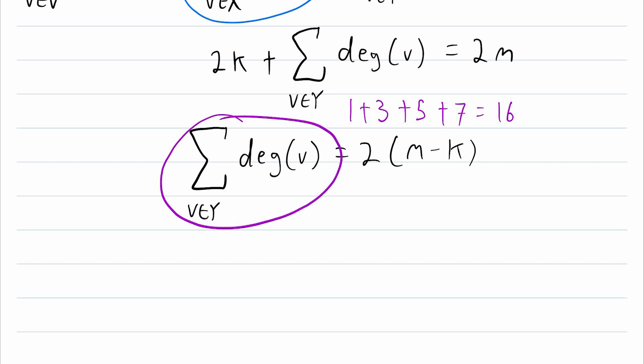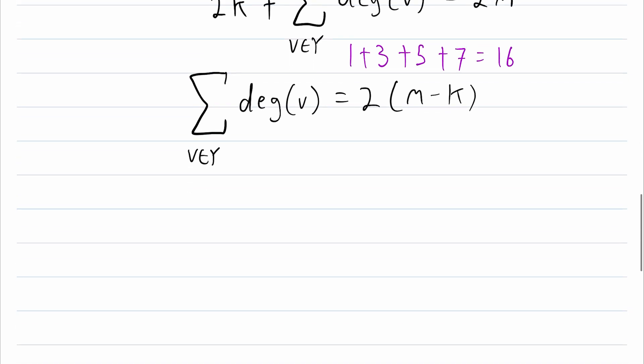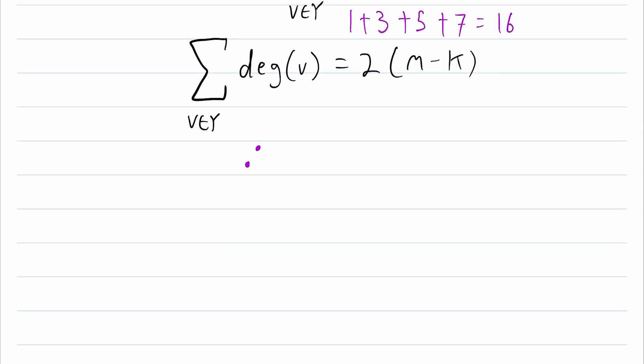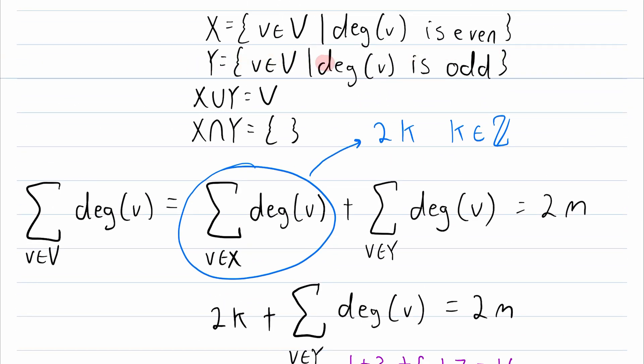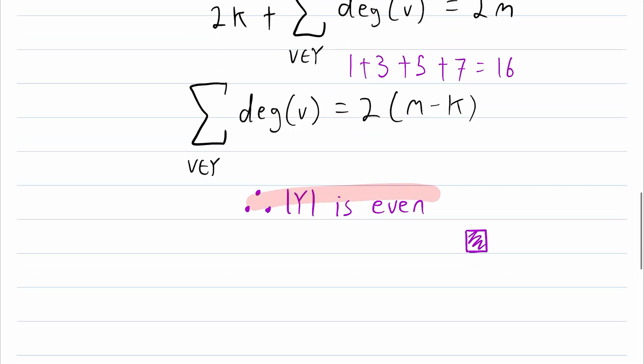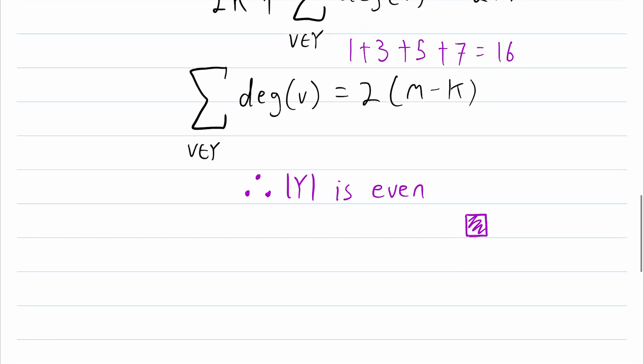Therefore, the total number of odd degrees has to be even. So, we'll write those three dots for therefore. Therefore, the cardinality of Y, the number of odd degree vertices, is even. And, that, my friends, is our proof. Remember that we defined Y as the set containing all odd degree vertices. So, we've proven that the cardinality of Y is even. Therefore, there's got to be an even number of odd degree vertices.